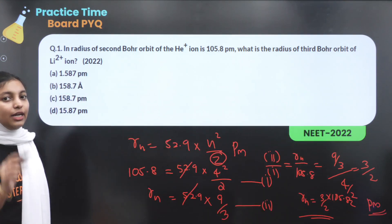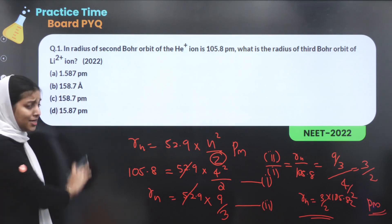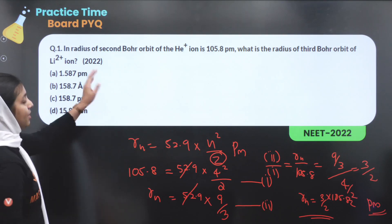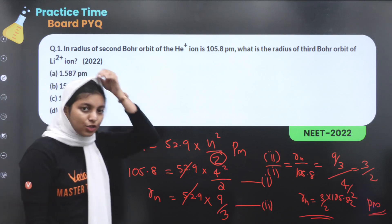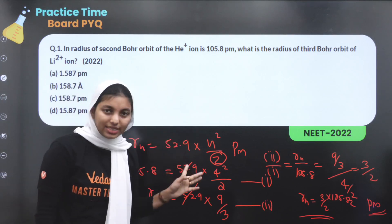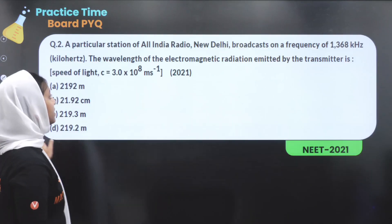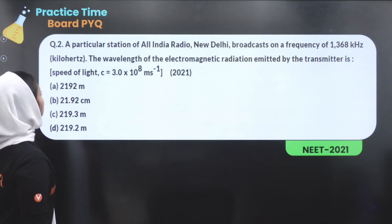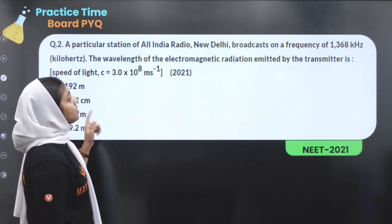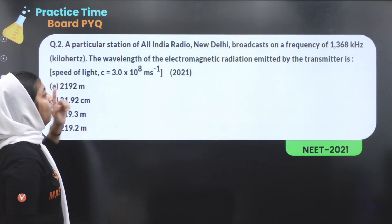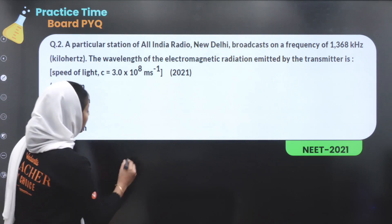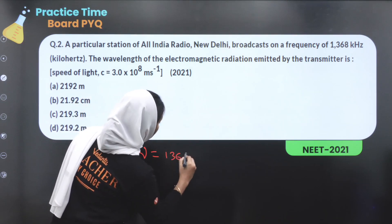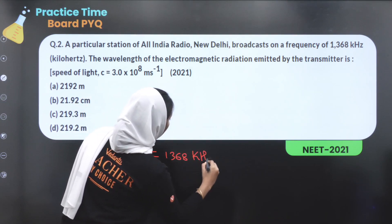You have to check and correct the unit. Next question: A particular station of All India Radio, New Delhi, broadcasts at a frequency of 1368 kHz.